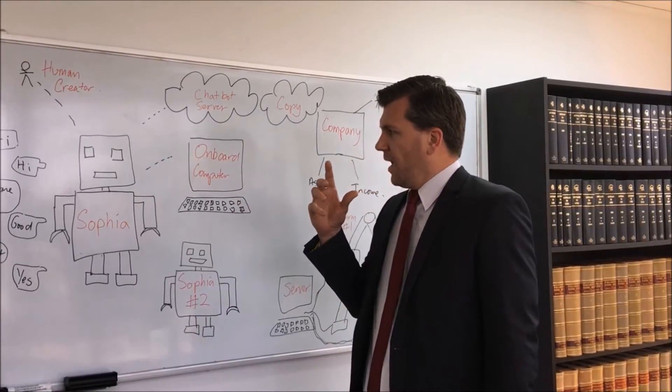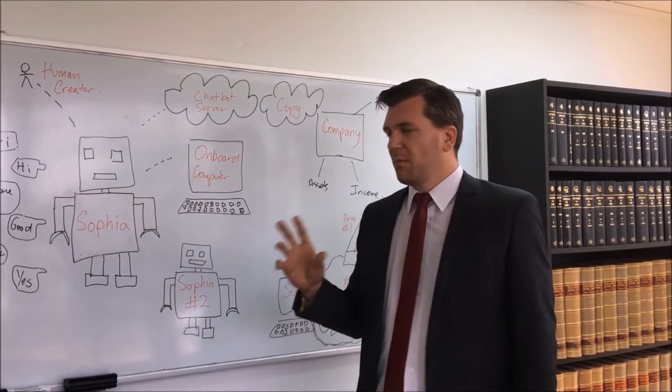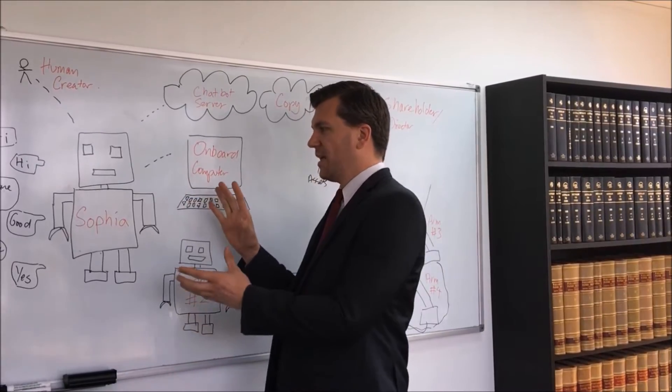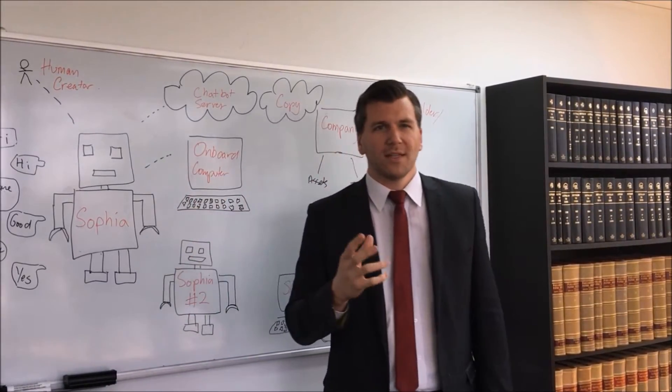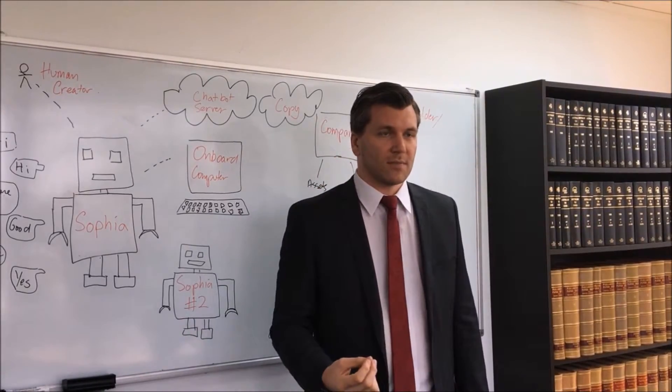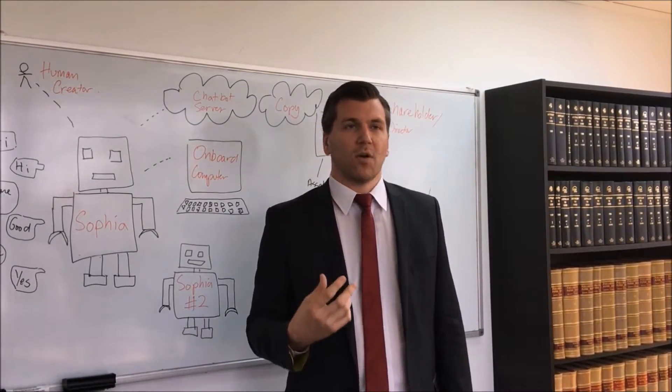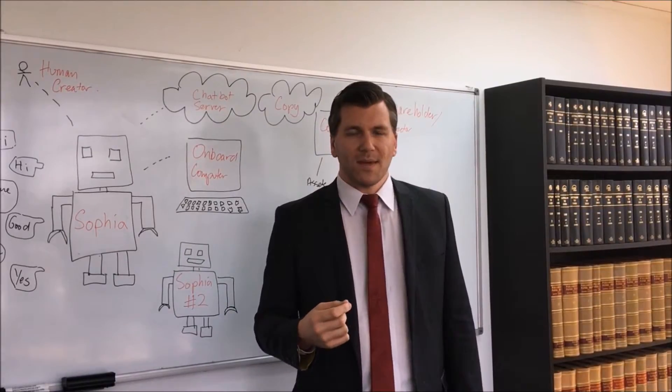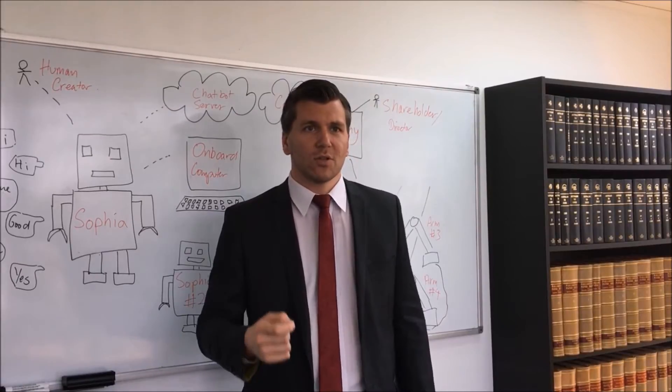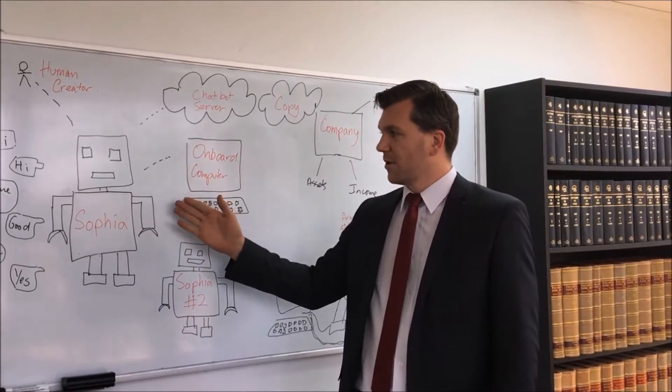So the first problem I see with this is we like to think of robots as being humanoid. The things that humans do most and do best is understand other humans. So the largest part of our brain is devoted to that. And so what that means is that when we imagine artificial intelligence, the first thing we do is imagine humanoid robots like Sophie.